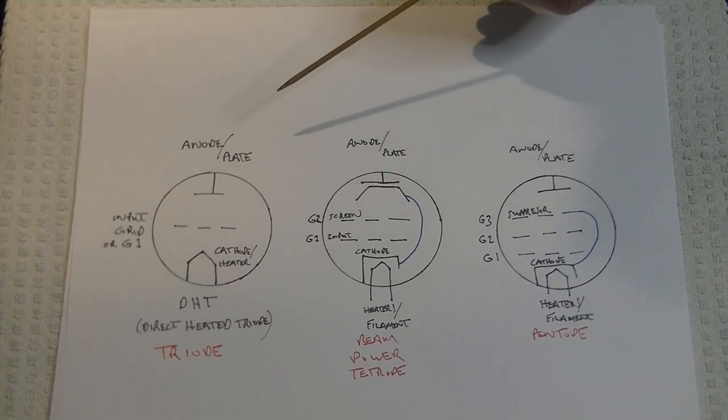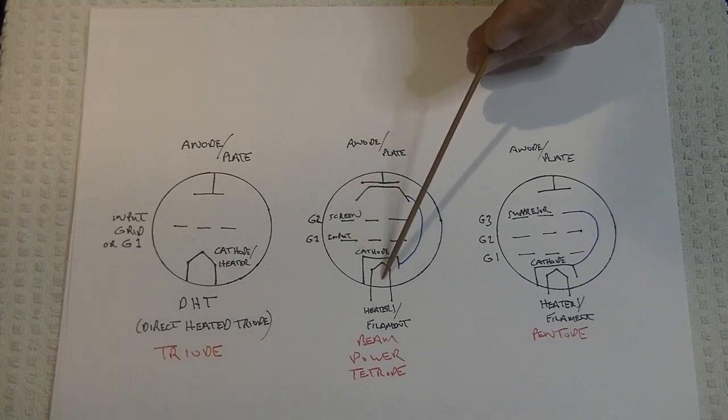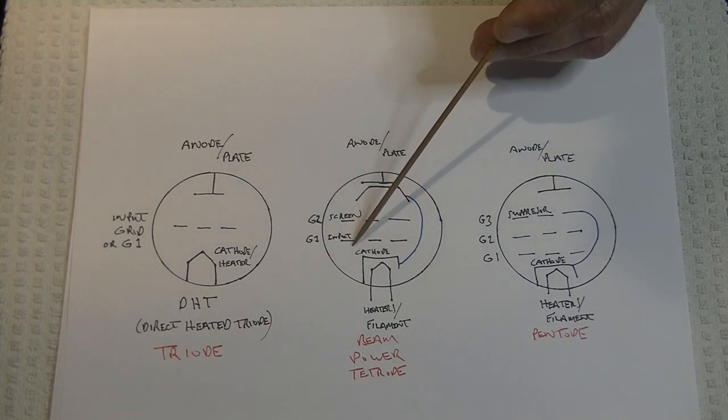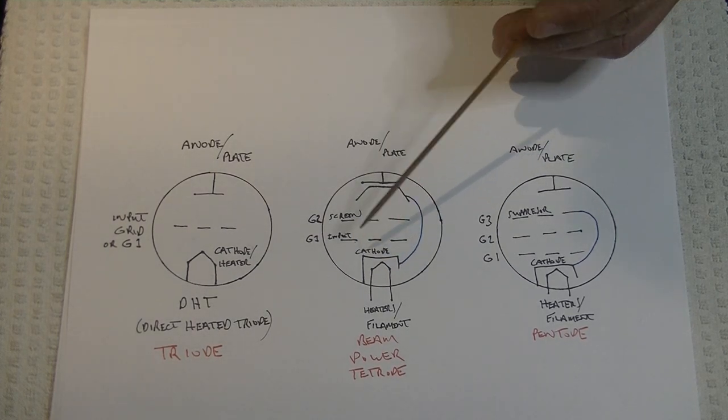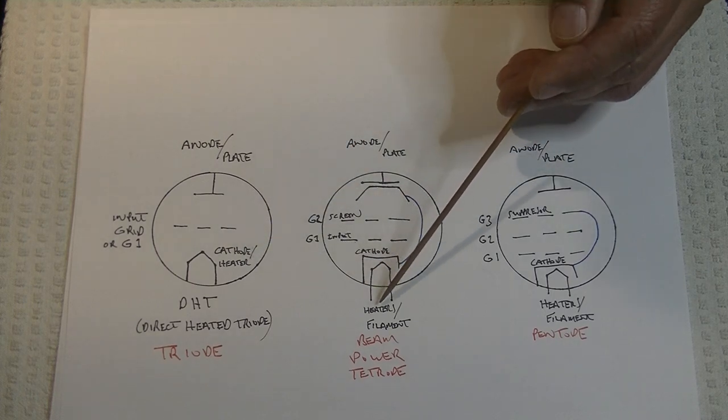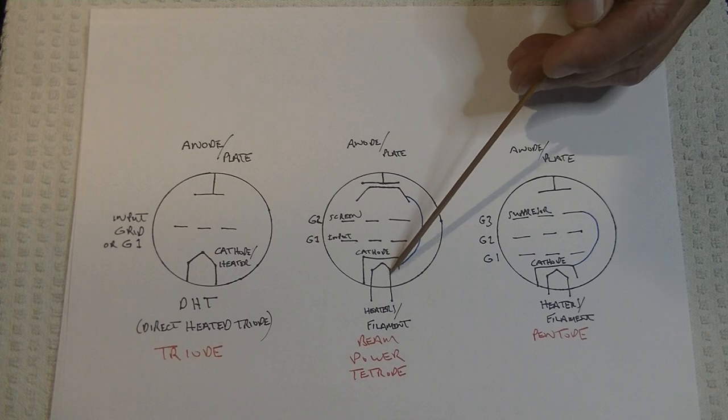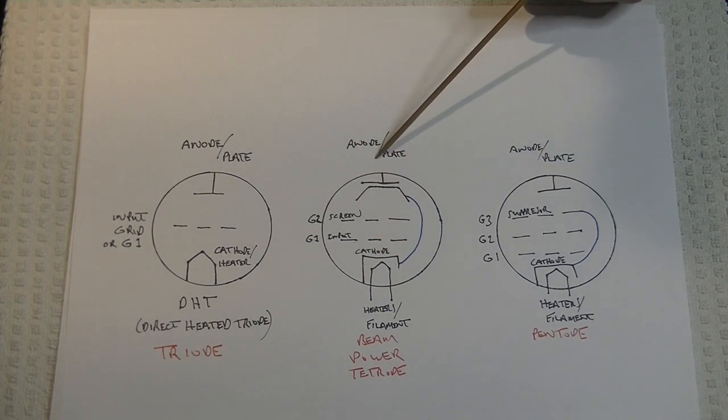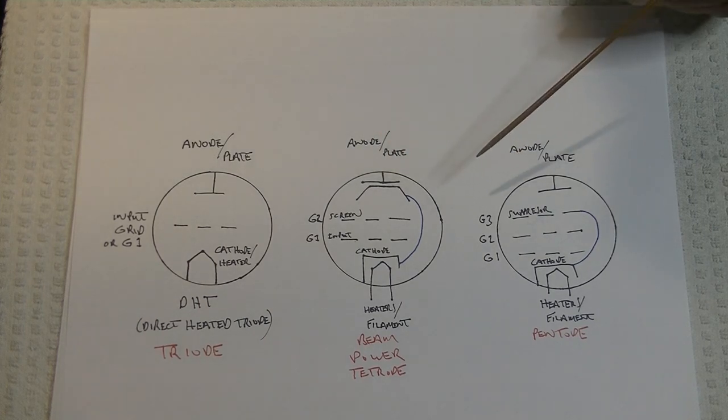By separating the cathode and the filament, when you separate them electrically, you reduce the potential for noise substantially. The filament or heater is still producing a lot of heat, because that's what gets the electrons moving off of the cathode. And they're attracted to the high voltage on the plate.